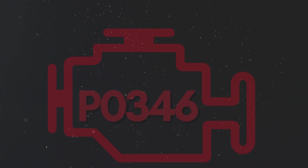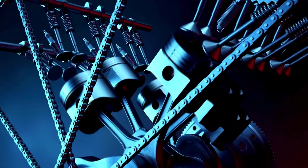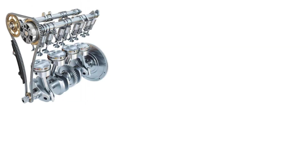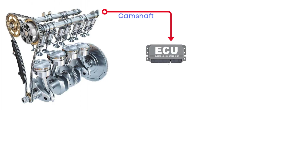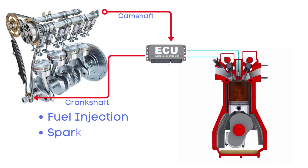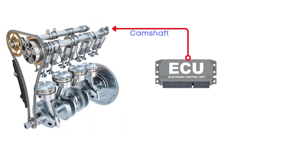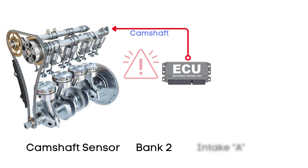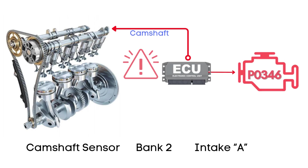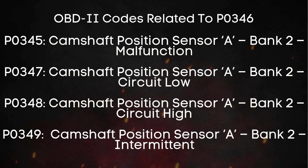Now let's learn why P0346 was triggered. The camshaft position sensor keeps track of the exact position of the camshaft as it rotates, and constantly sends this signal to the ECU, or engine control unit. The ECU doesn't just rely on this one signal — it also takes in information from the crankshaft position sensor, engine speed, and engine load. With all this data, the ECU can precisely control things like fuel injection, ignition timing, and even when the valves open and close. But if there's a problem with the camshaft position sensor circuit, the ECU can't get the right camshaft data, and it triggers the P0346 code.